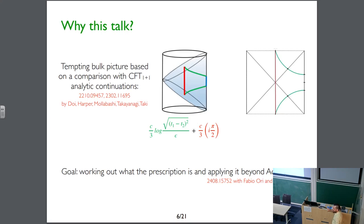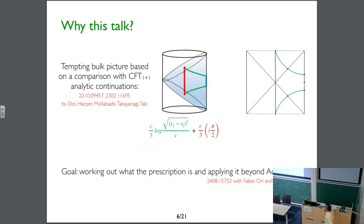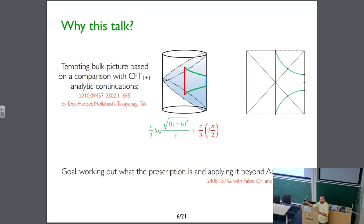What I'm talking about is the bulk interpretation of this analytic continuation. The original reference pursued a tempting bulk picture based on comparison with the analytic continuation of the universal CFT result. This bulk picture is very beautiful and convincing. It is based on the idea that when we calculate entanglement entropy we calculate the length of a geodesic — in ADS-3 this geodesic is spatial, so the length is real and non-negative.